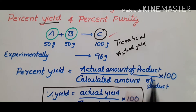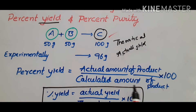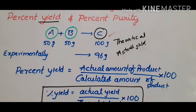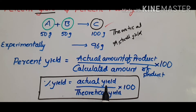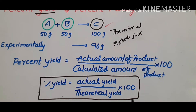Percent yield is the actual amount of product divided by the calculated amount of product, multiplied by 100. So percentage yield equals actual yield divided by theoretical yield, multiplied by 100. We can calculate this exactly and this will give you percent yield.